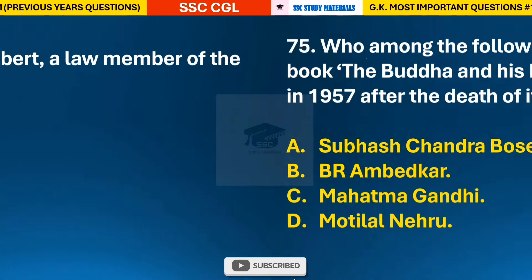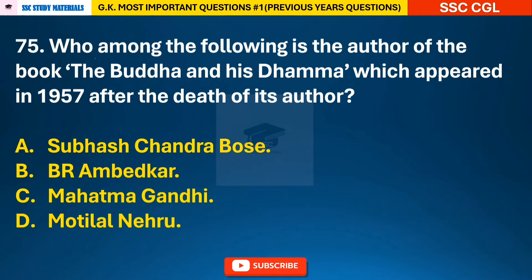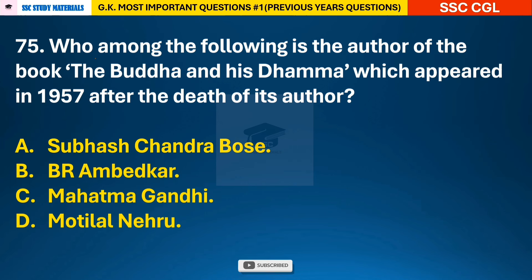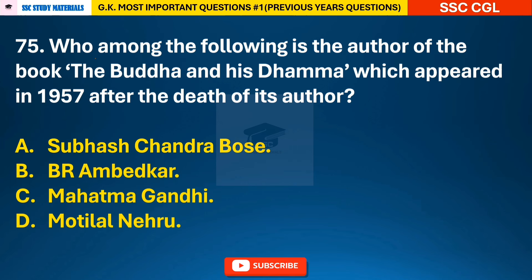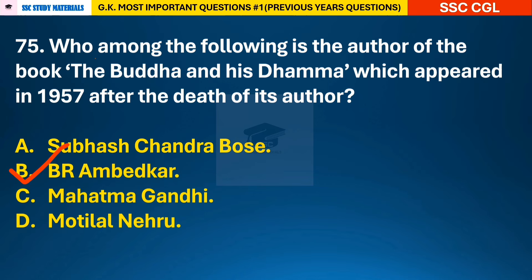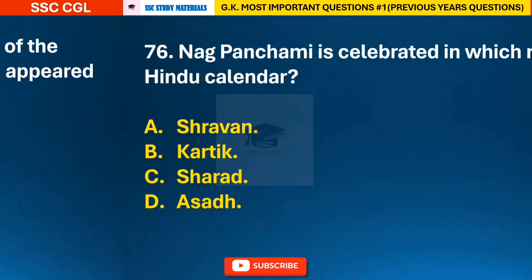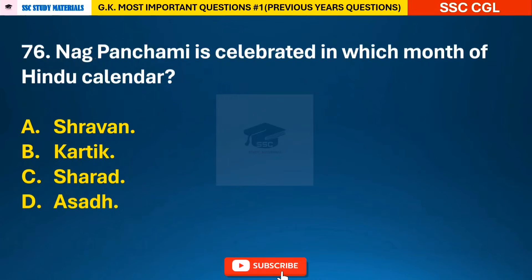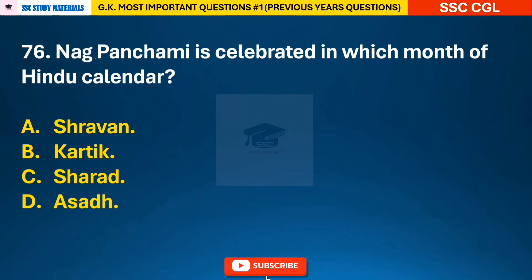Question 75: Who among the following is the author of the book 'The Buddha and His Dhamma', which appeared in 1957 after the death of its author? — answer B: B.R. Ambedkar. Question 76: Nag Panchami is celebrated in which month of the Hindu calendar?